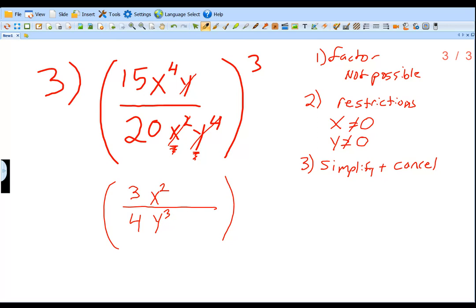So our simplified version here is going to be 3 over 4, X squared, Y to the third power, still raised to the third power on the outside there. So now that the inside is simplified, we could take care of this to the third power. Anytime we have parentheses raised to an exponent, that exponent is going to be applied to every single term within those parentheses.